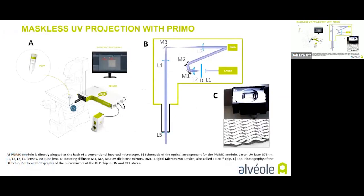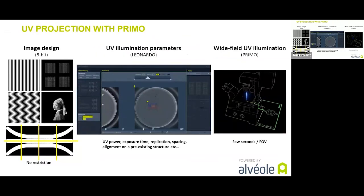PRIMO is an optical module plugged at the back of a conventional inverted microscope. Under the control of the Leonardo software, it allows for the projection of UV patterns of any shape and size with a micrometric resolution into the sample placed on the motorized stage of the microscope. The workflow starts with designing an image, including images with different gray levels. Once loaded into Leonardo, the parameters of UV projection can be set up, and UVs are projected through the objective according to the images and parameters entered.